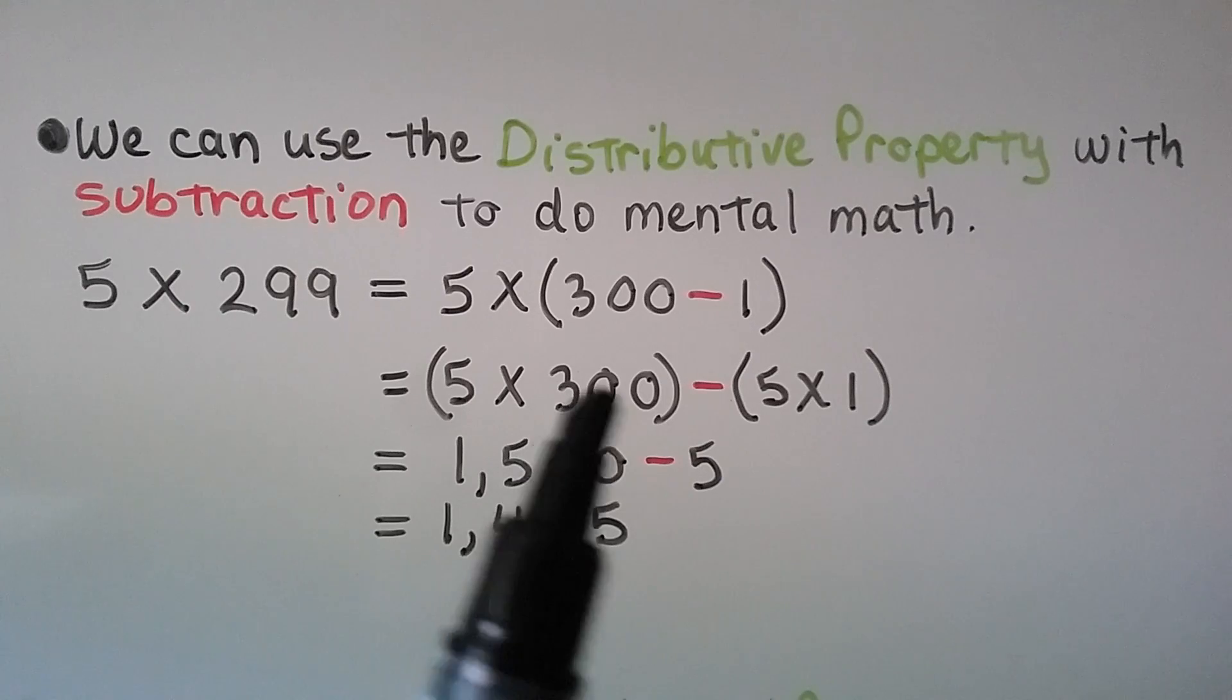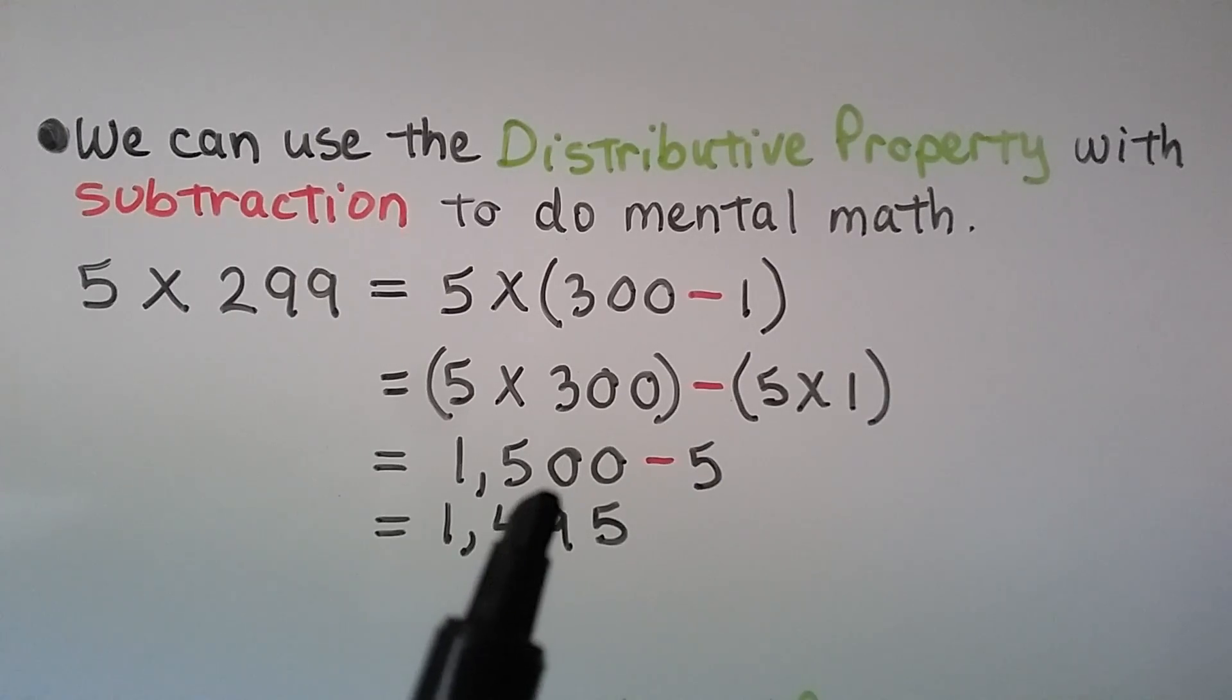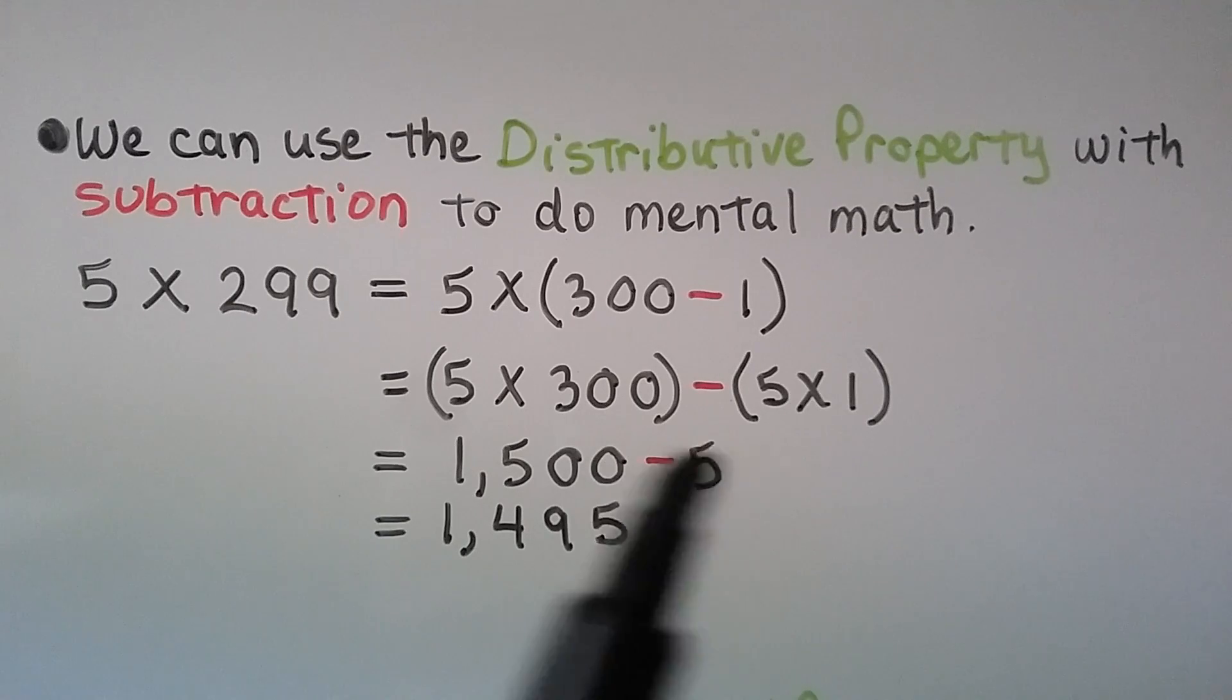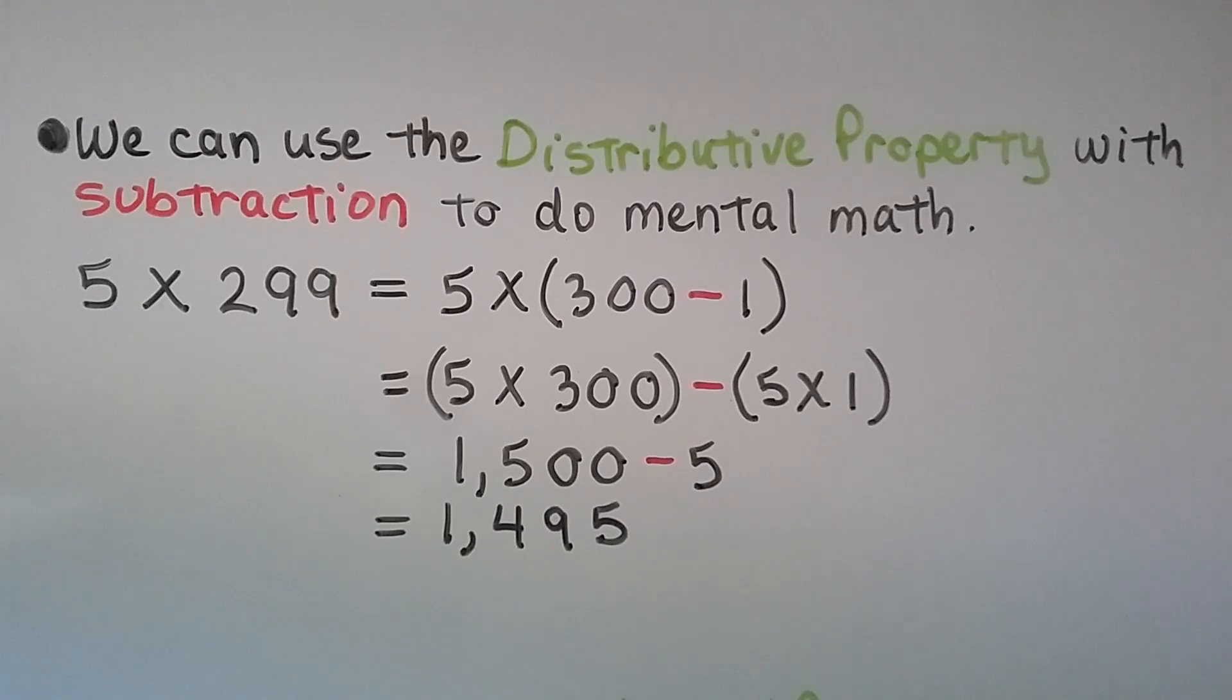5 times 300 is 1,500, then 5 times 1 is 5, and we subtract 5 from the 1,500. It's equal to 1,495.